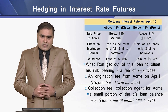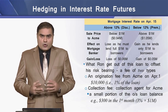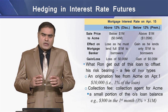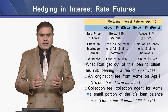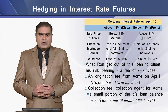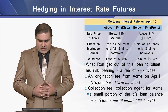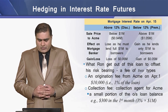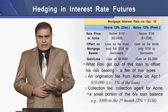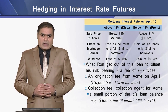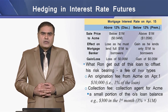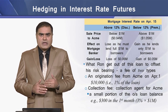The question arises: what does Ron get out of this loan to offset his risk bearing? Ron will be receiving two types of fees from Aceman. The first is the origination fee from Aceman on April 1 — let's say 1% of the loan — so he will be receiving $10,000 as an origination fee. The second is the collection fee: since Ron will be working as a collecting agent for Aceman, he will be collecting a certain percentage on the outstanding balance each month.